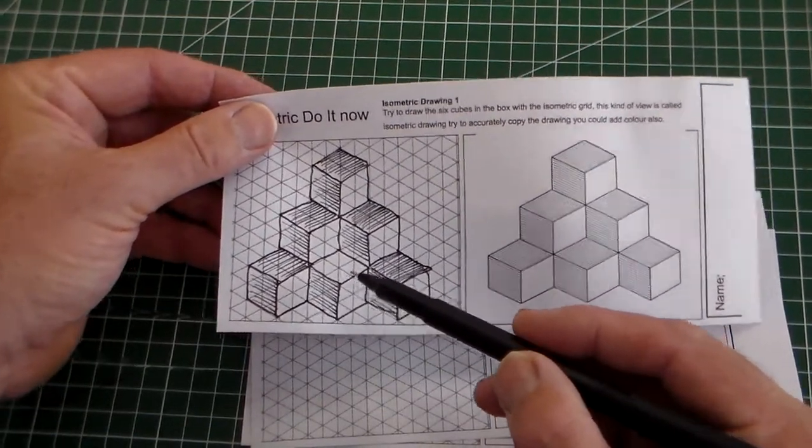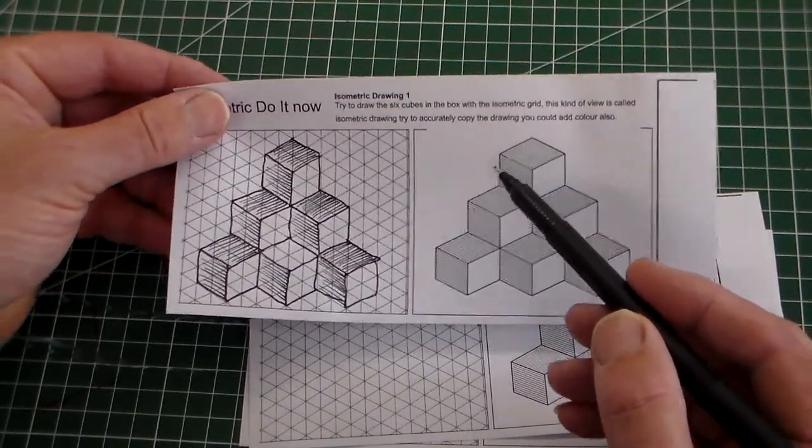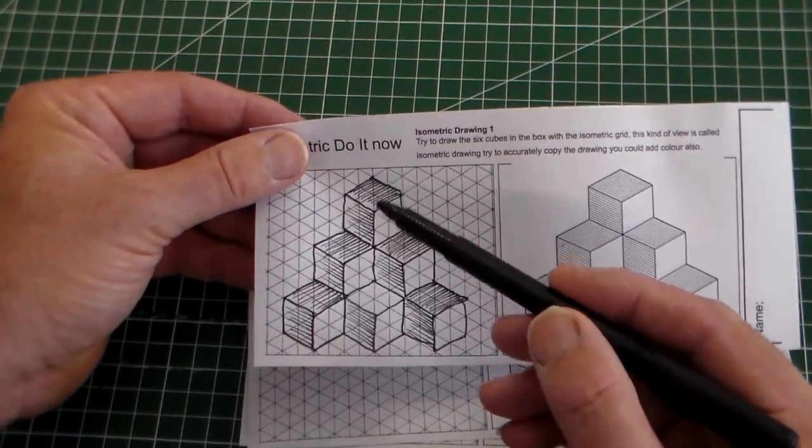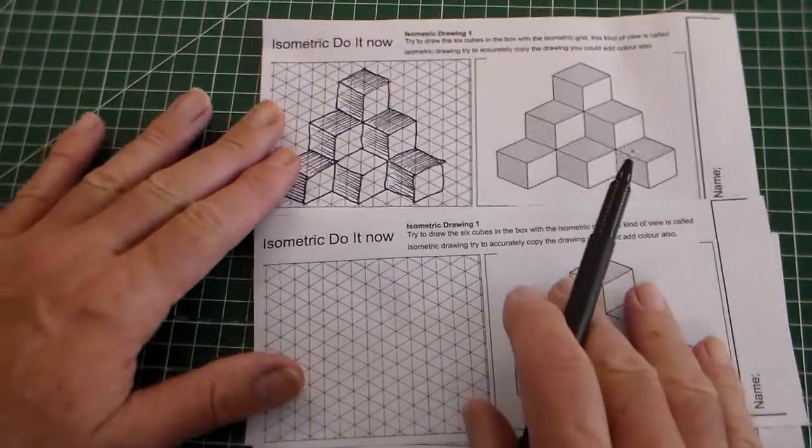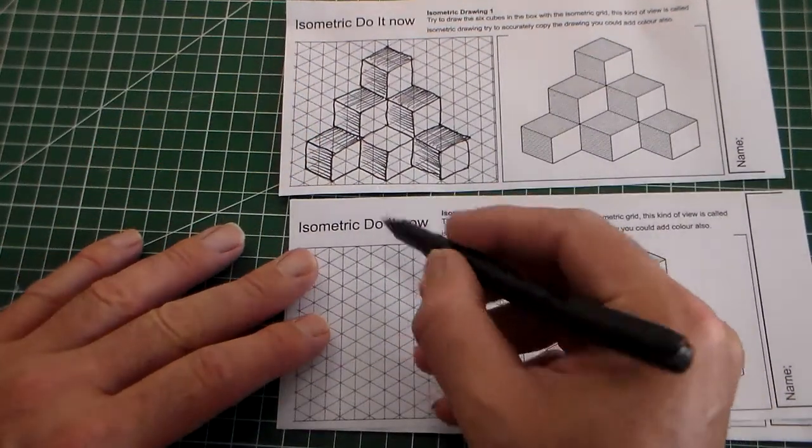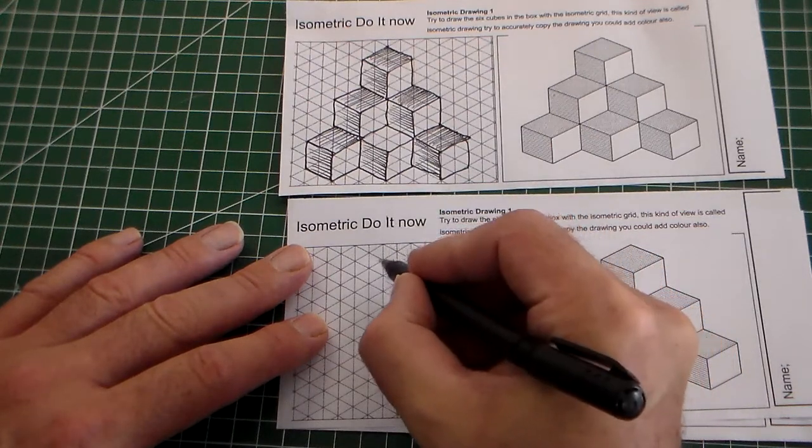Now, when we start with this, it looks quite complex, but in fact it's just a series of cubes. We've got this cube here, and what's important is that we start in the right place. So if we look at that, and we look where we've got to start, we've got to ensure that we start in the middle here.